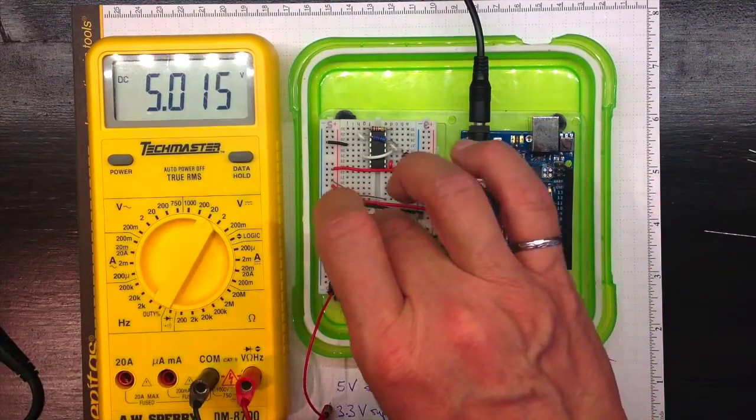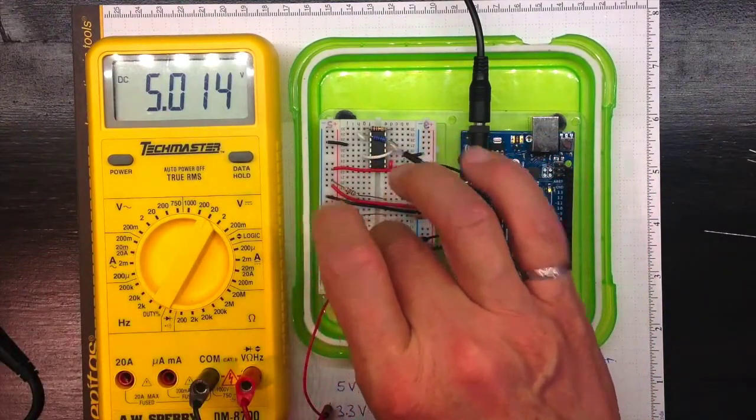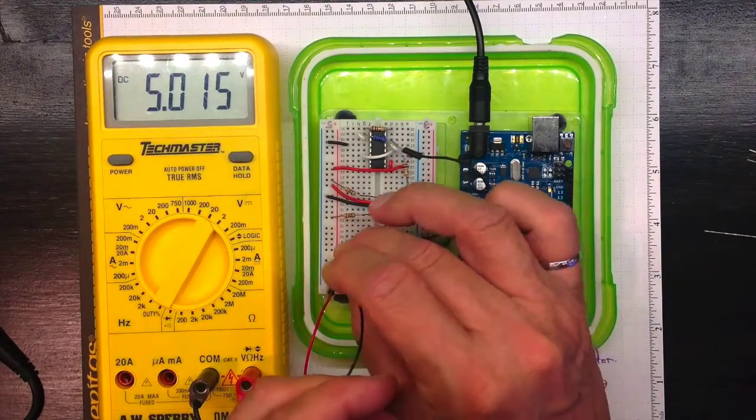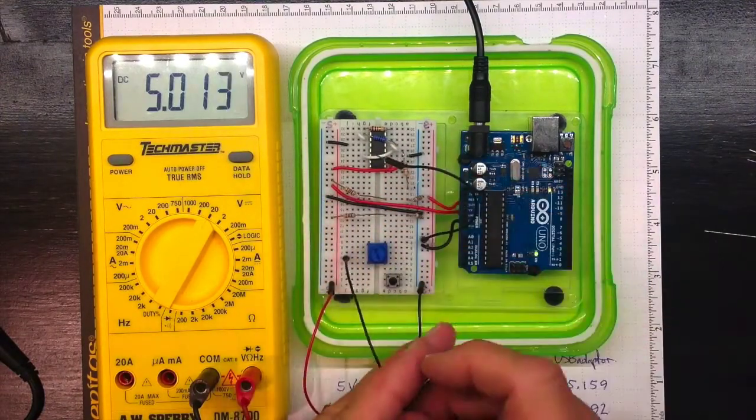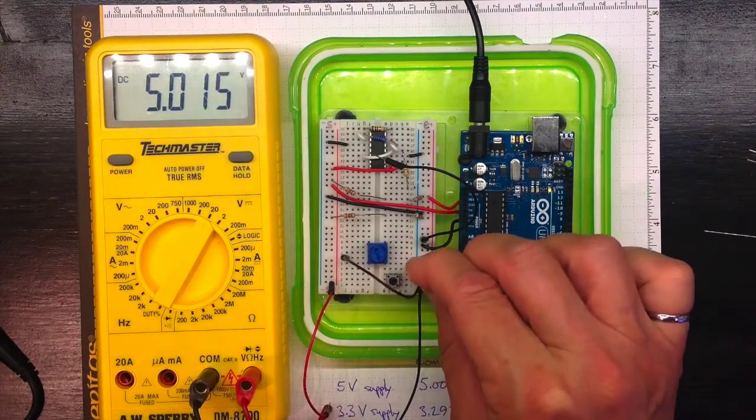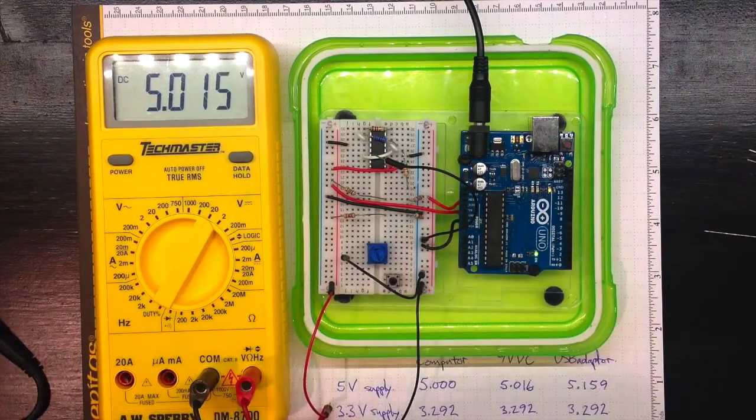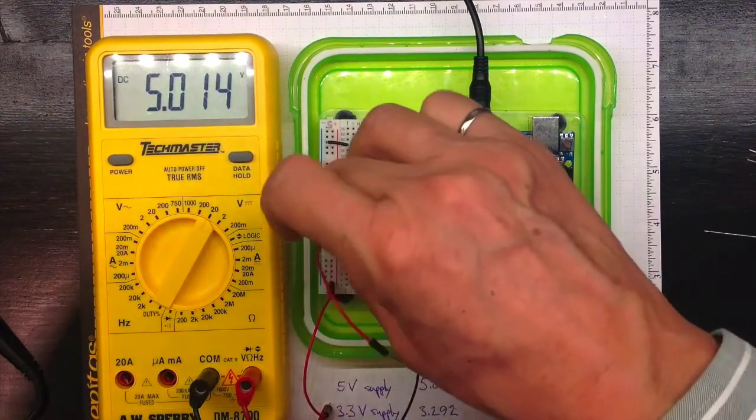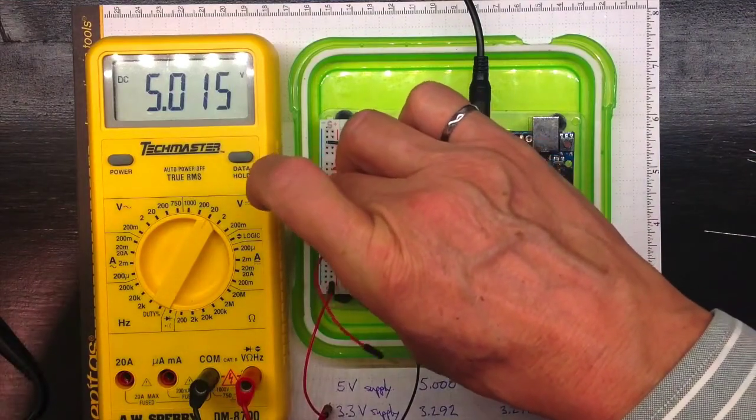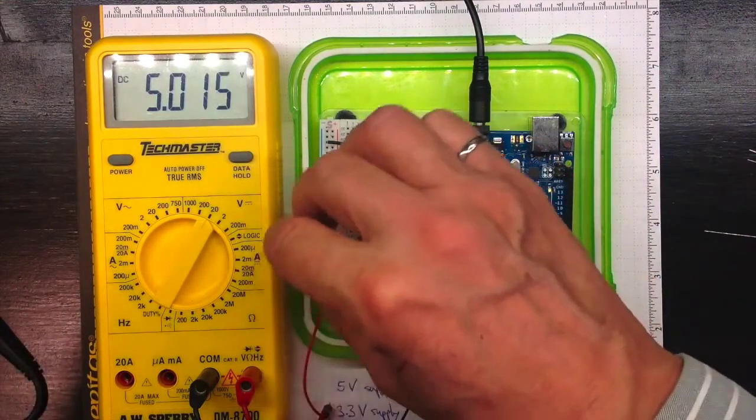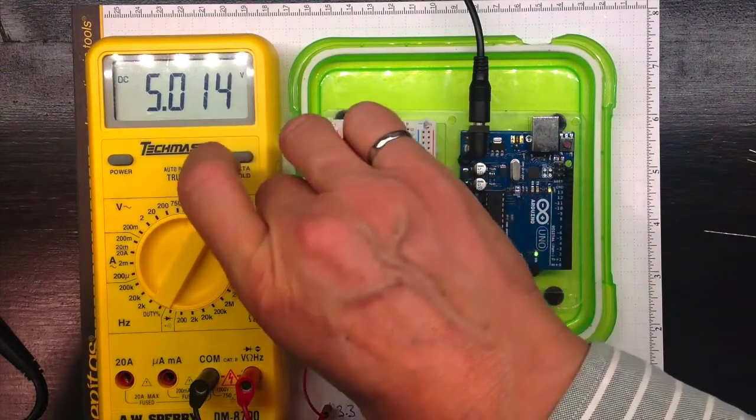So let's plug that in. There's three wires plugged in there and I'll connect this side of that potentiometer to ground. I'll connect the other side of the main resistance of that potentiometer to plus five volts.